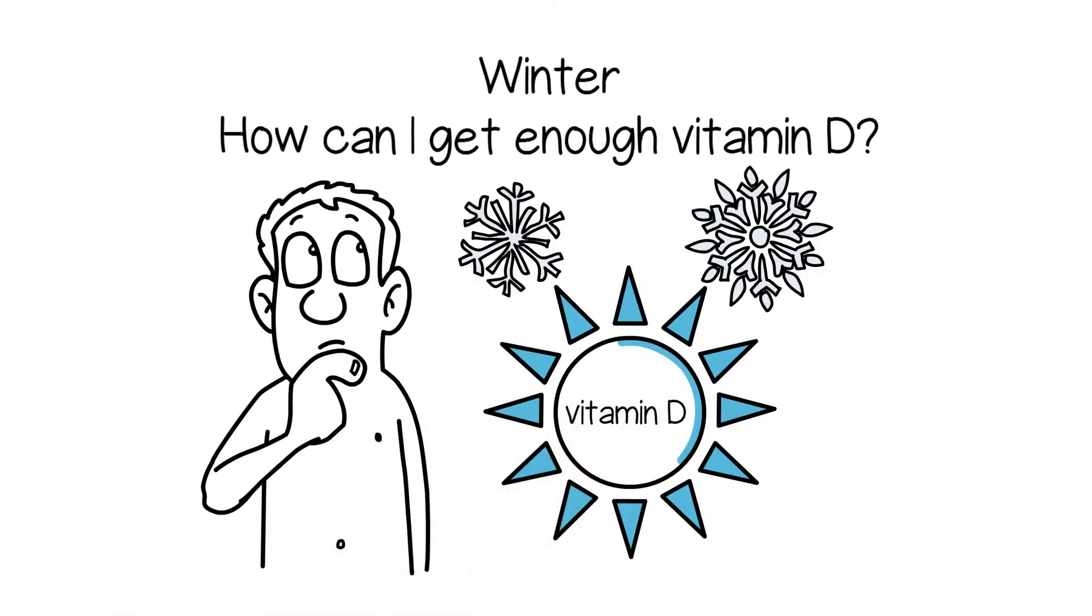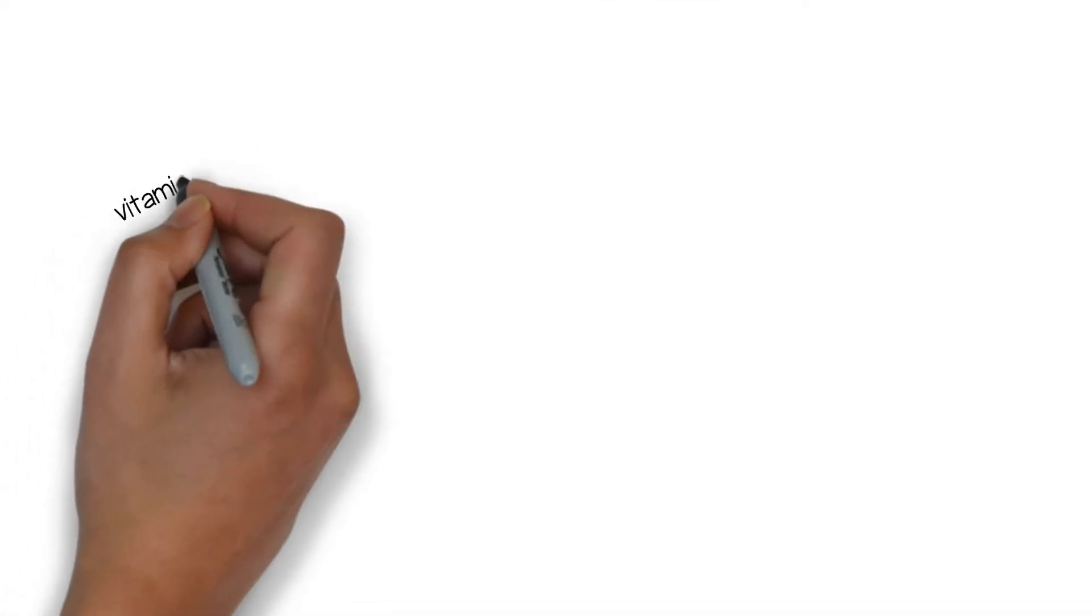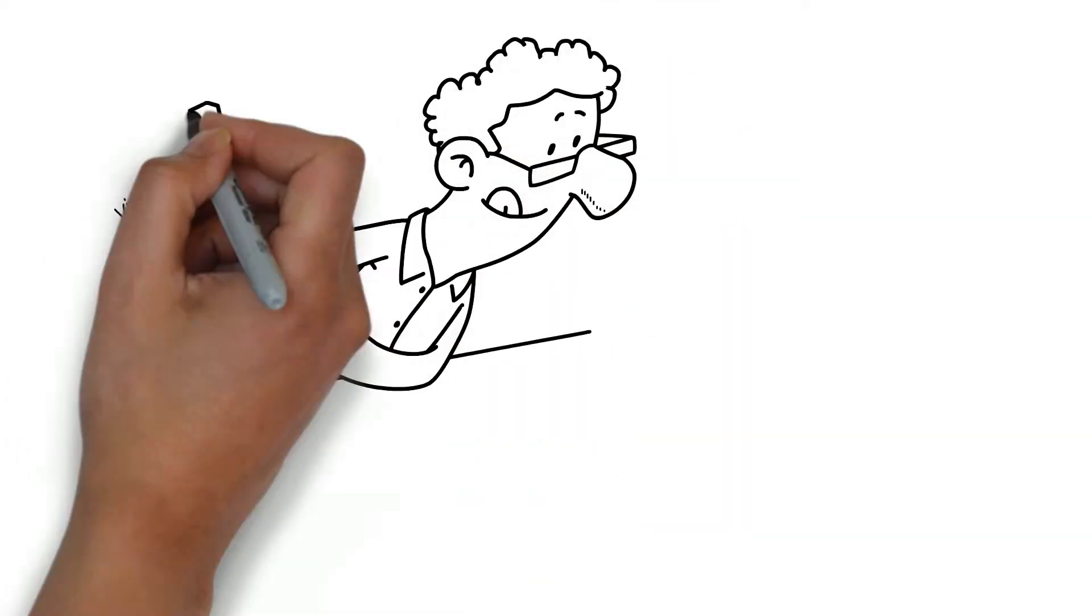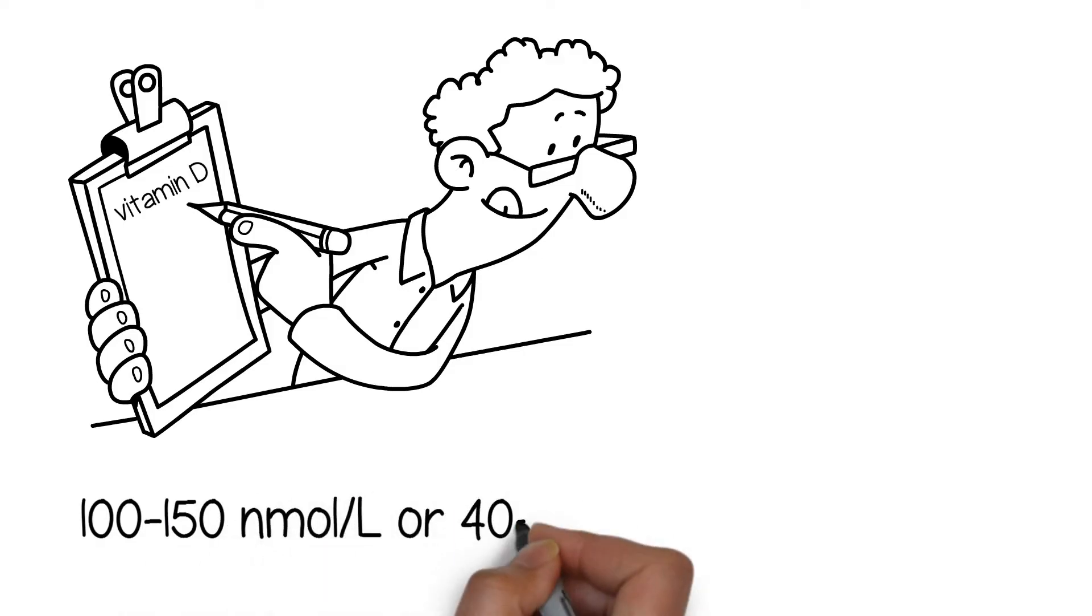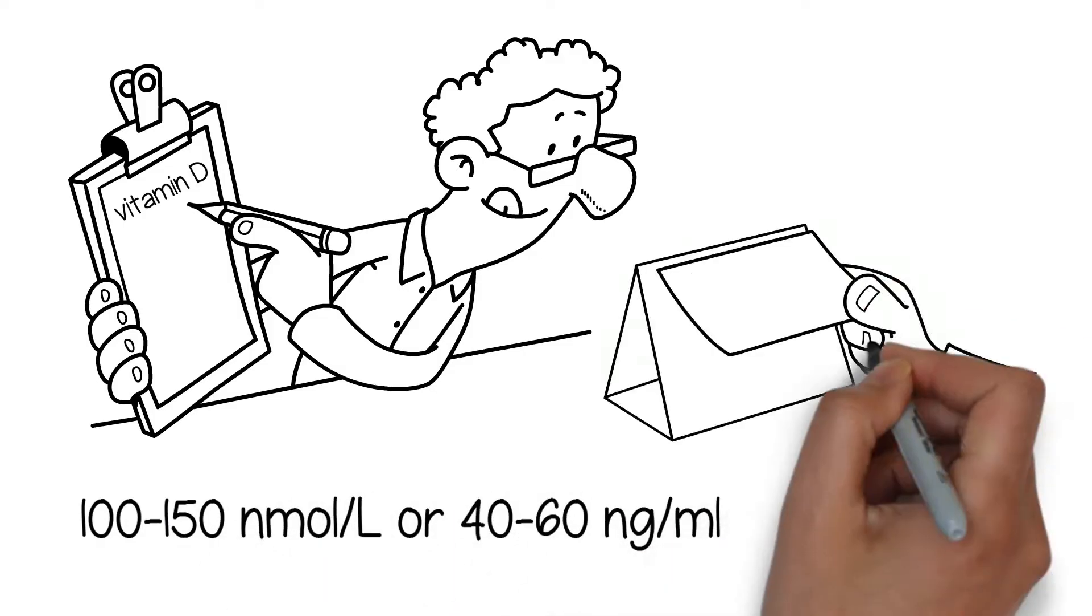Winter, how can I get enough vitamin D? Vitamin D scientists recommend you maintain an optimal vitamin D blood level of between 100 to 150 Nmol per liter or 40 to 60 Ng per milliliter throughout the year.